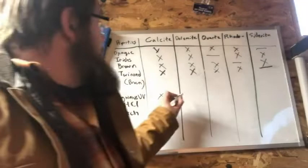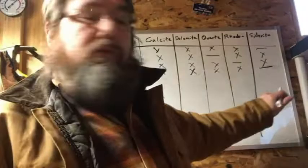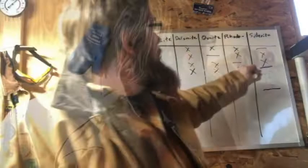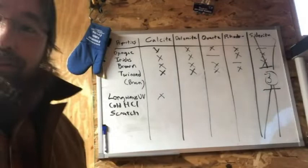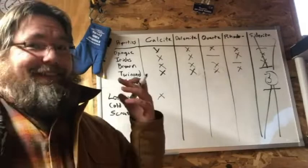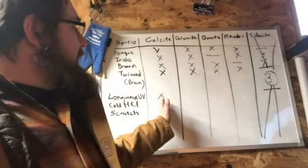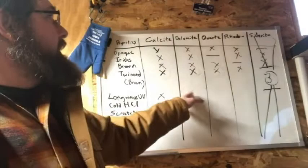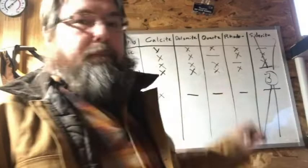Under long-wave UV, siderite doesn't fluoresce — so the fact that it fluoresced, that's strike three, and siderite is now out. The only one that gives a light, pale, or dull yellow is calcite. Quartz does the bright yellow. Rhodochrosite also fluoresces but not that color. So we can eliminate those.